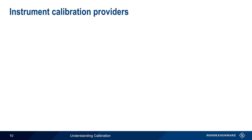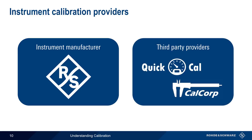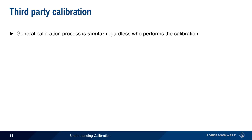So who provides these calibration services? Calibration providers can generally be divided into two categories. In addition to performing the initial calibration, original equipment manufacturers normally also provide calibration services for their instruments. However, there are also third-party providers that offer calibration services for instruments from many different manufacturers. In the remainder of this presentation, we'll take a few minutes to describe the most common differences between manufacturer and third-party calibration.